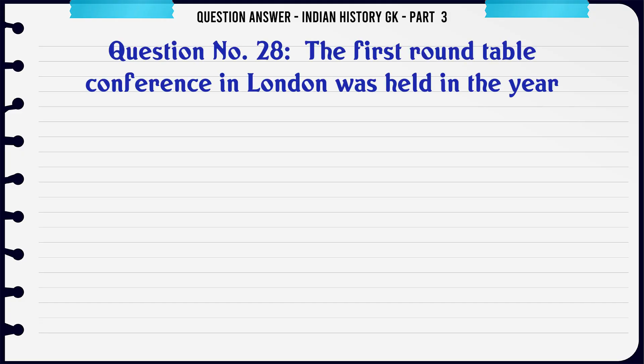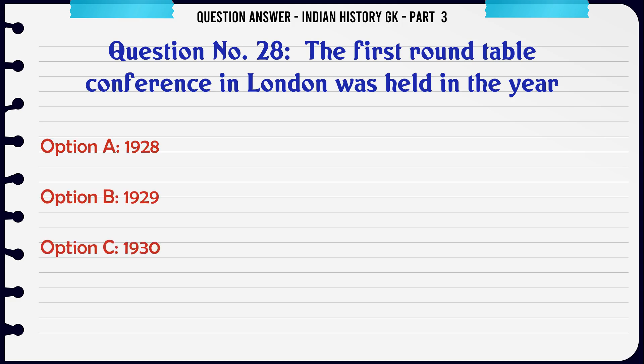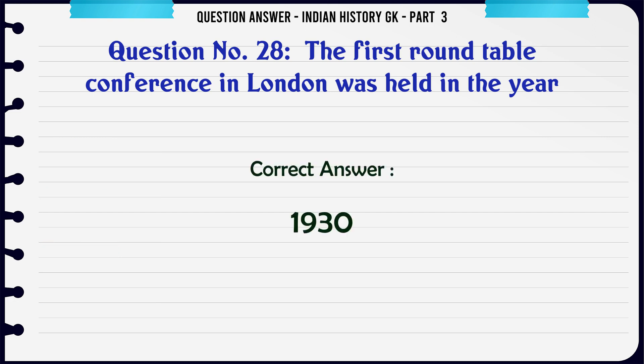The first Round Table Conference in London was held in the year: A. 1928, B. 1929, C. 1930, D. 1931. The correct answer is 1930.